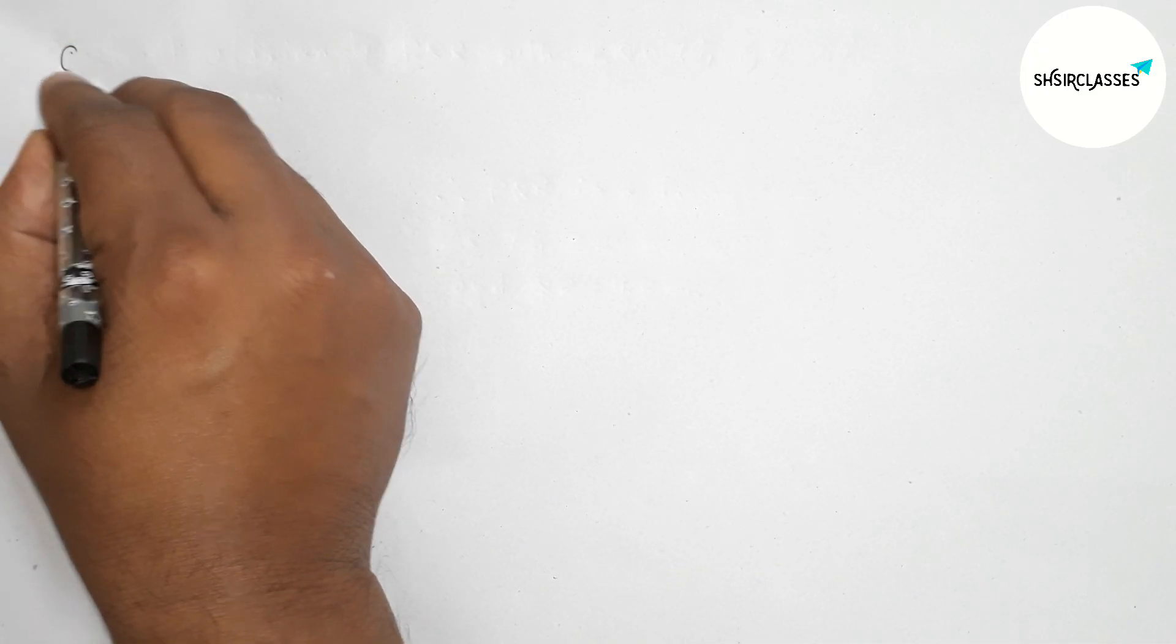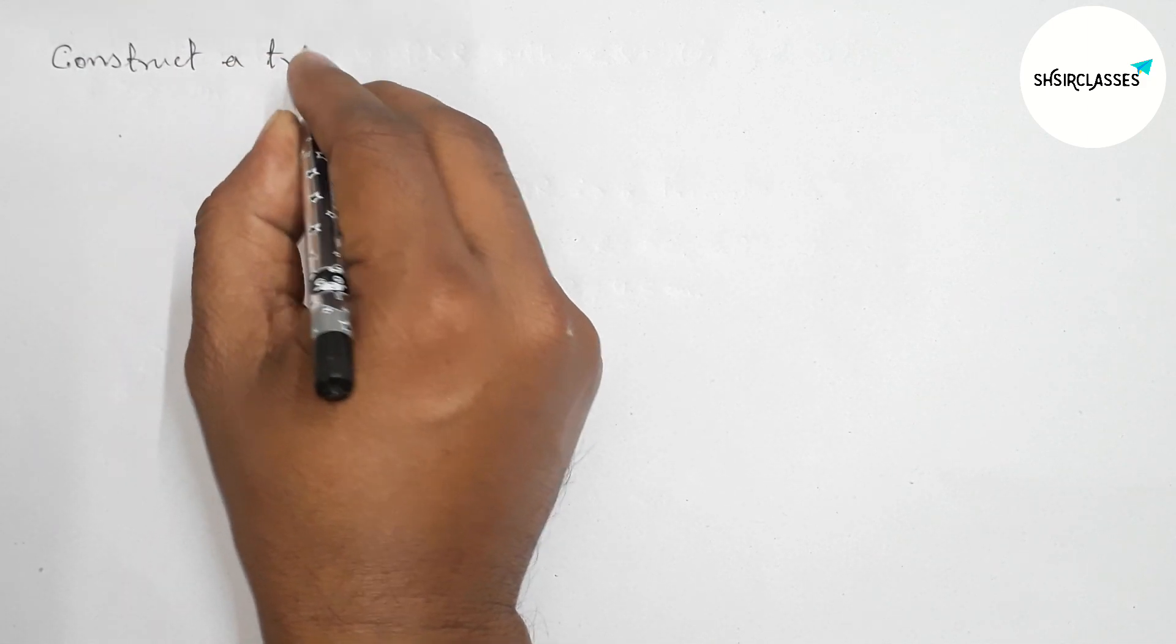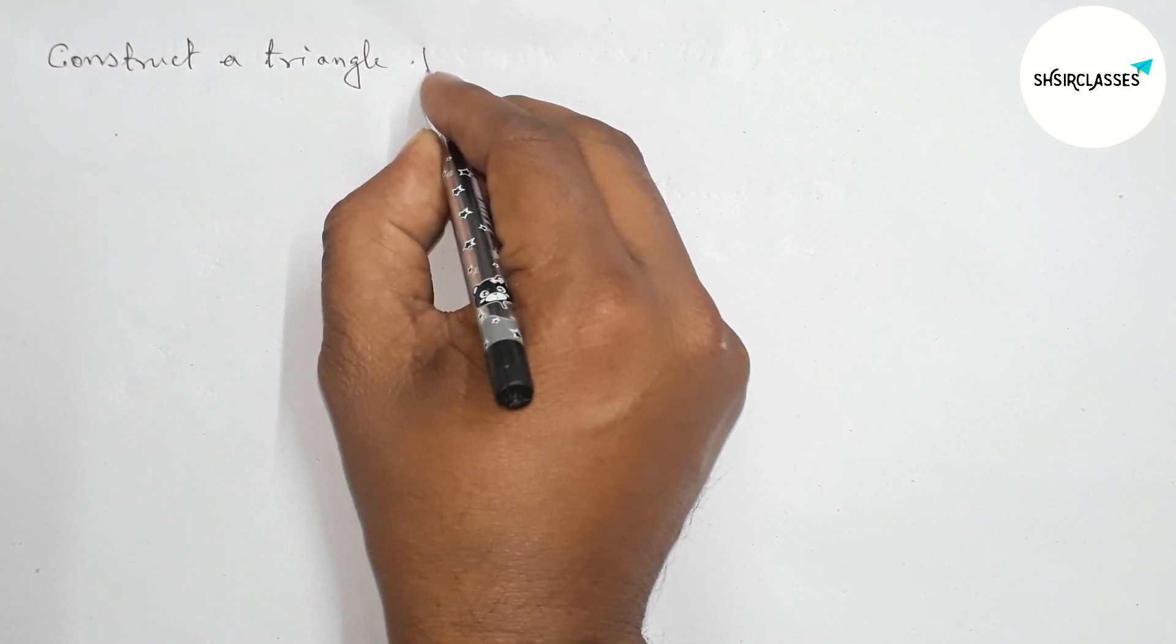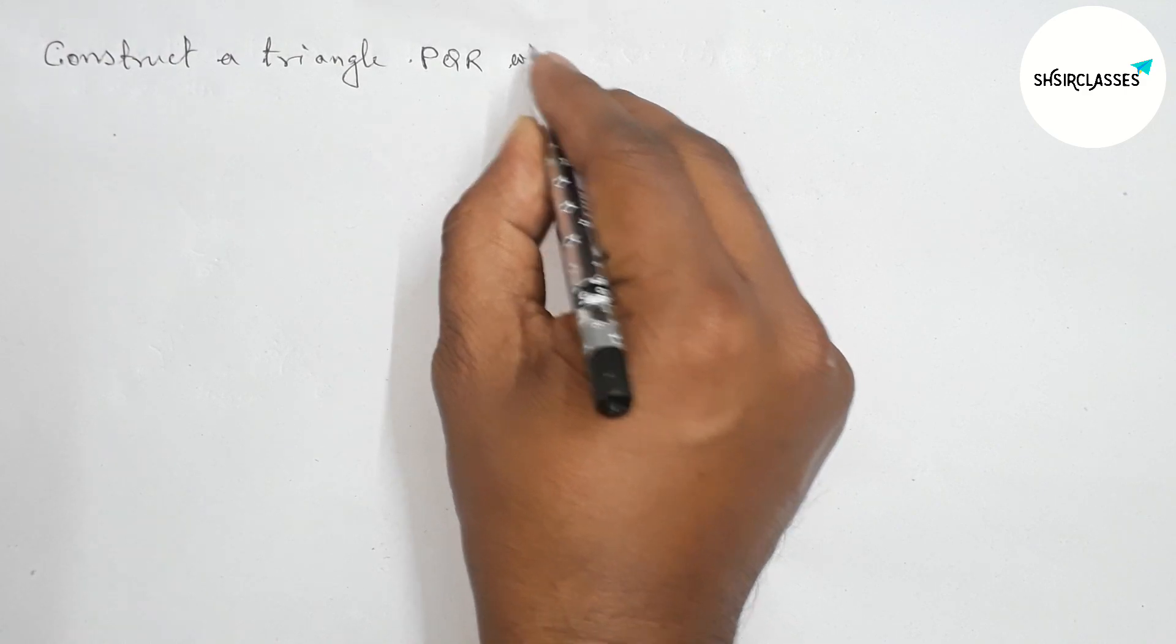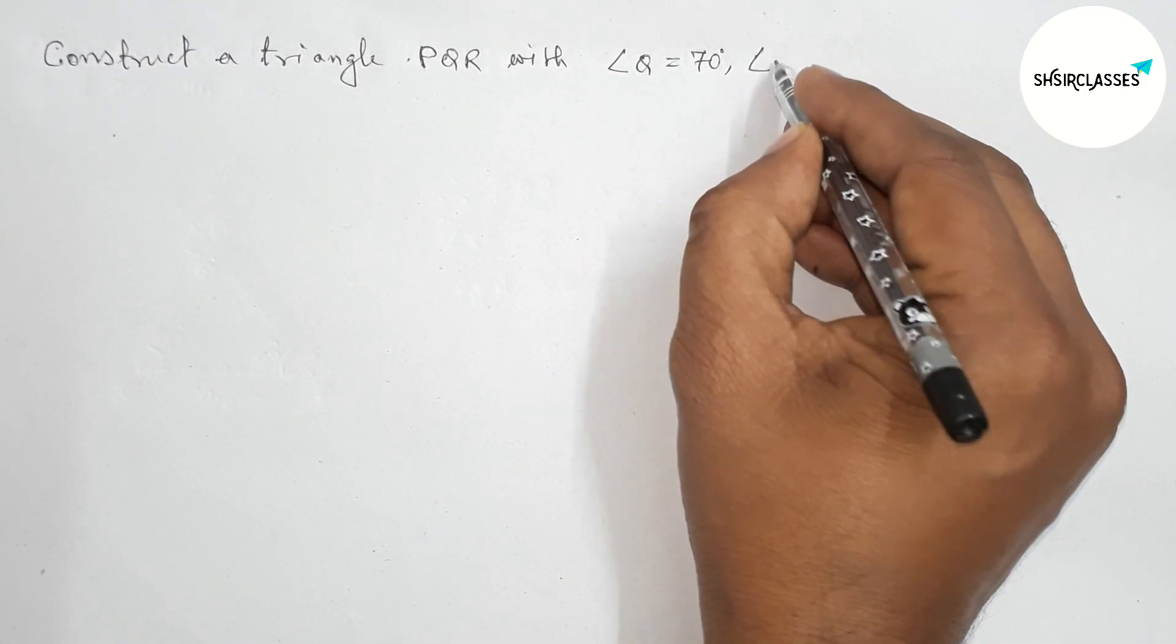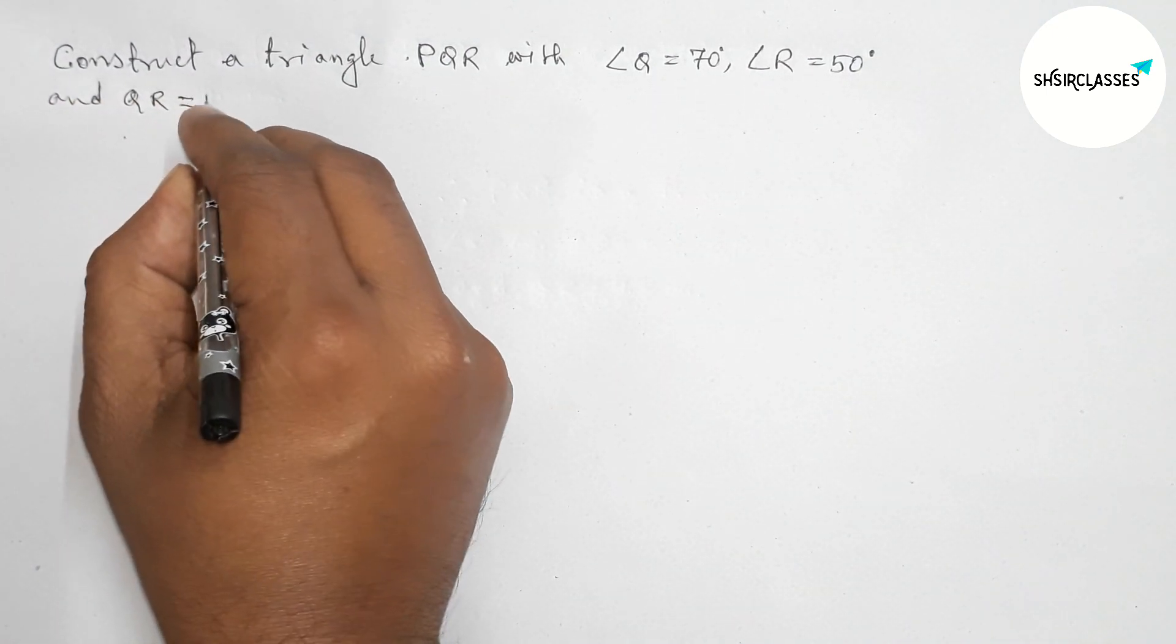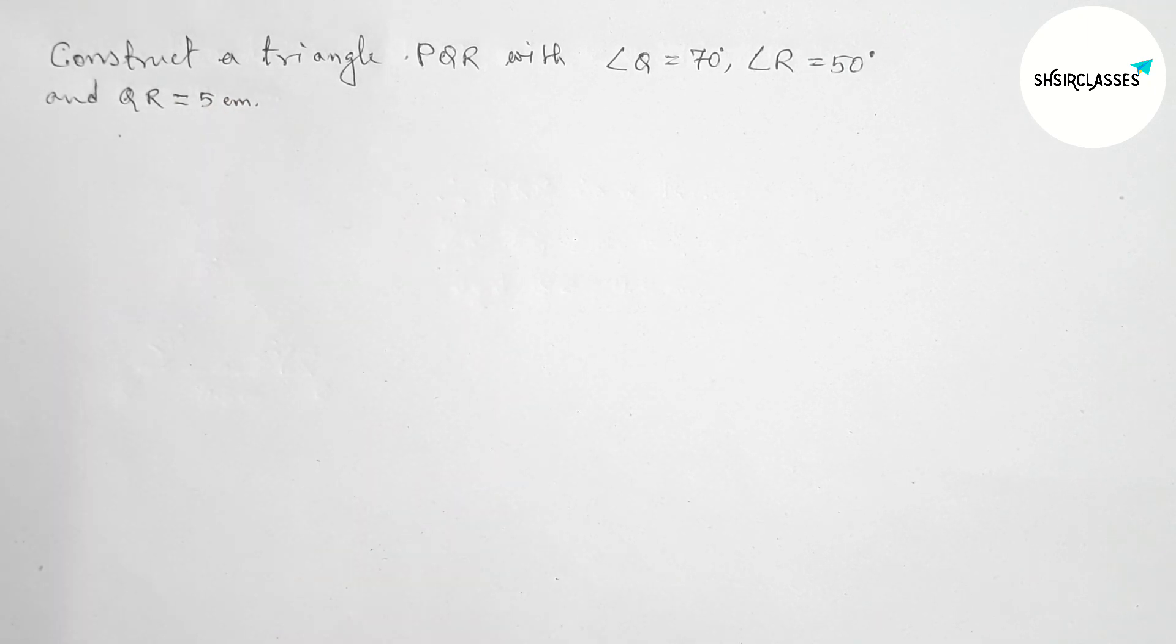Hi everyone, welcome to Sai Share Classes. Today in this video, how to construct a triangle PQR with given angles: angle Q equals 70 degrees, angle R equals 50 degrees, and QR equals 5 centimeters. Please watch the video till the end.